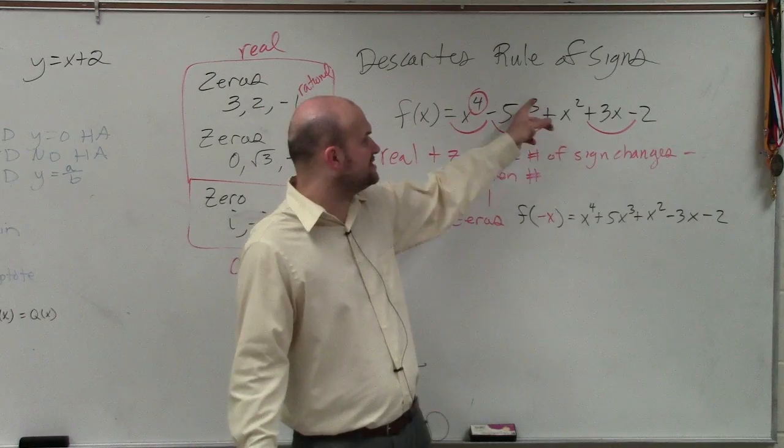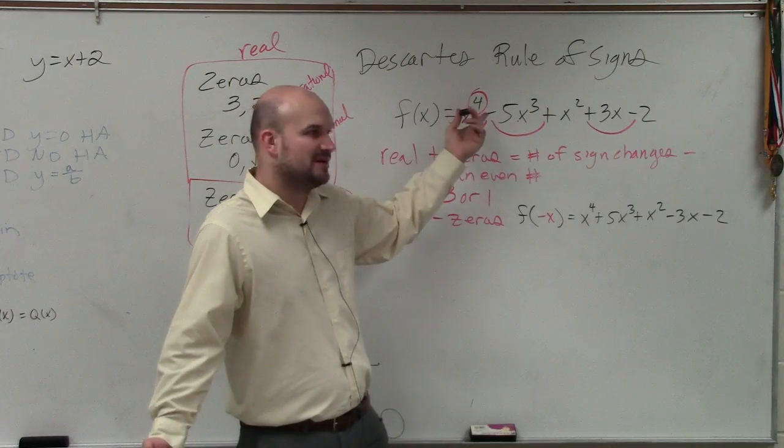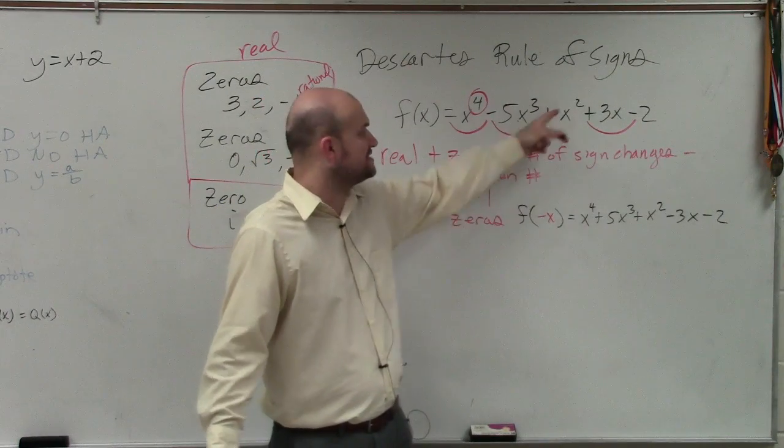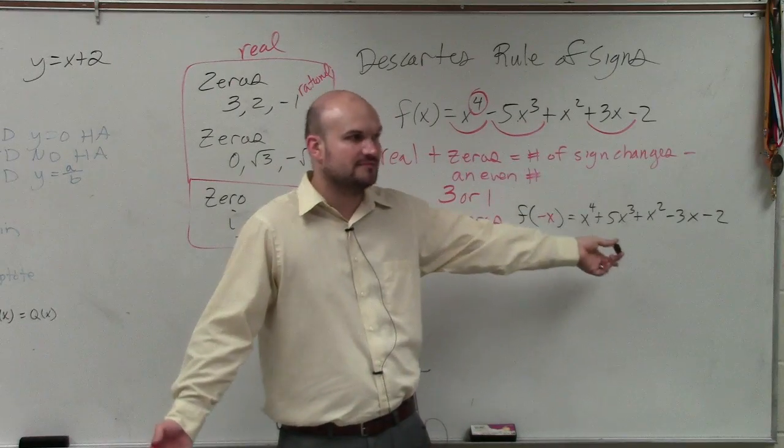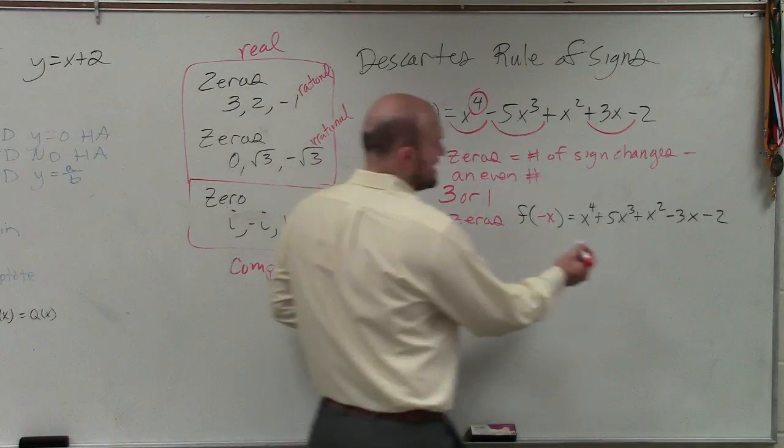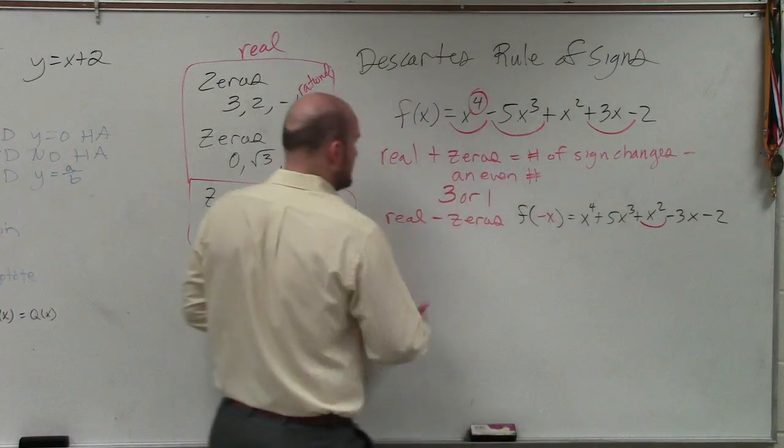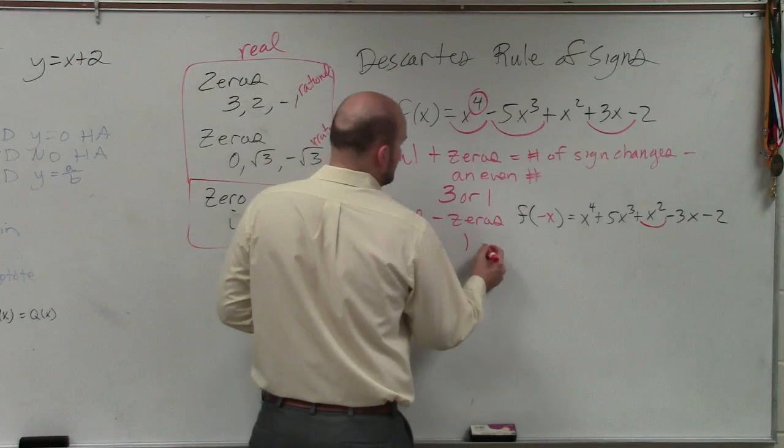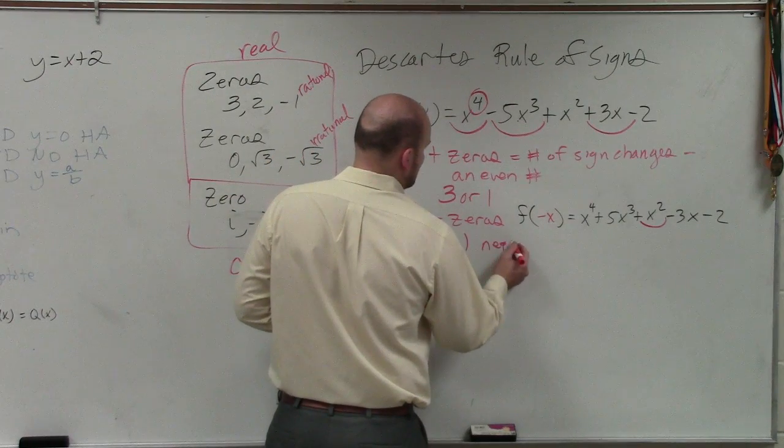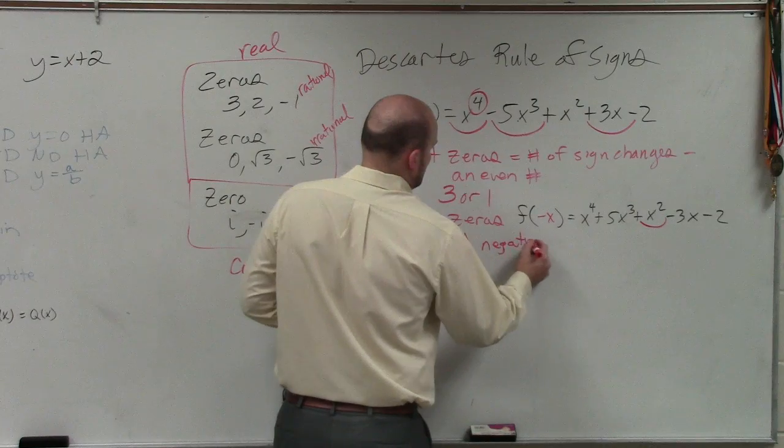Anytime you have a negative number raised to an even power, it becomes positive. Anytime you have a negative number raised to an odd power, it becomes negative. So our number of sign changes is only 1. So there is 1 negative real zero.